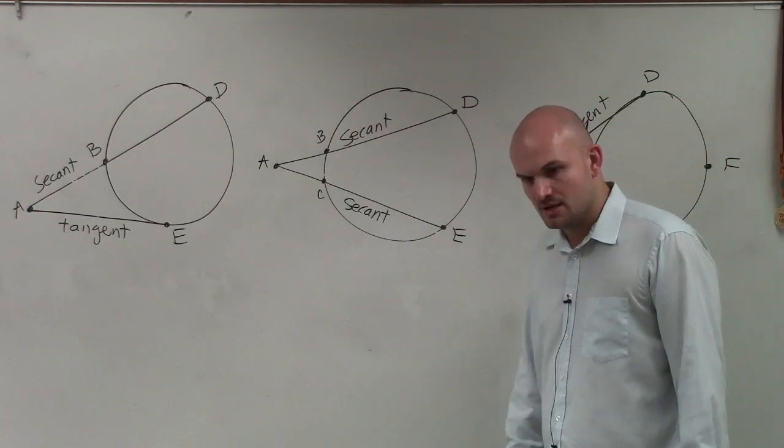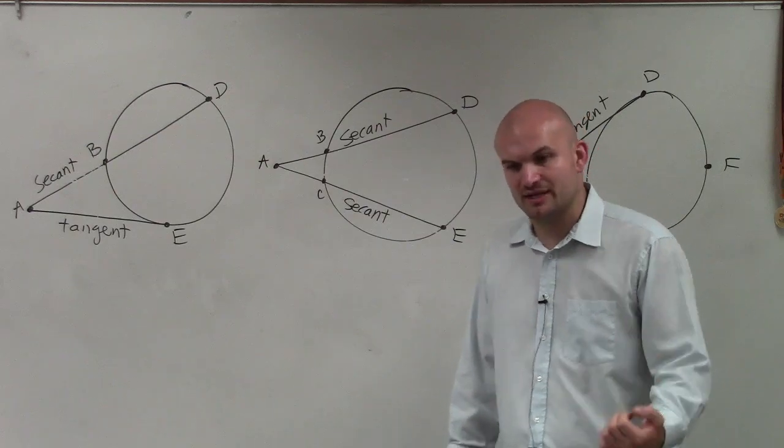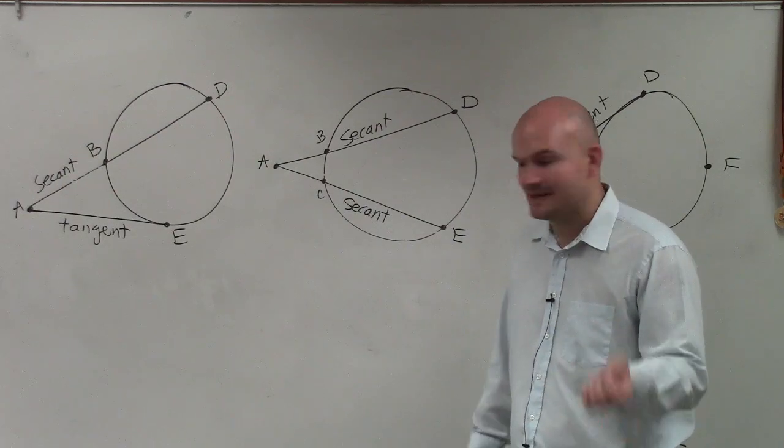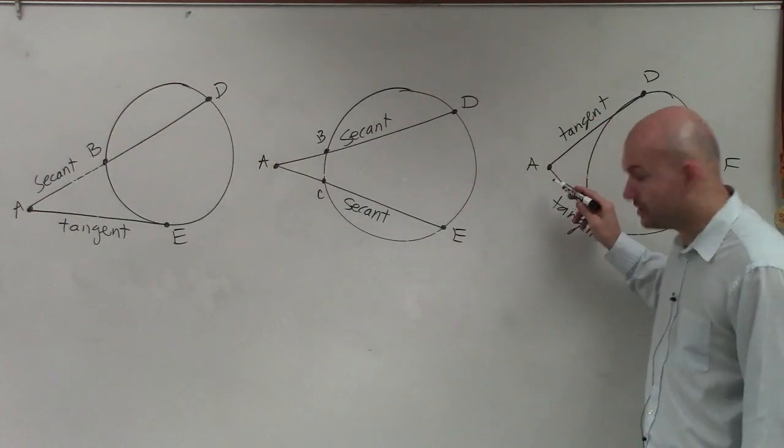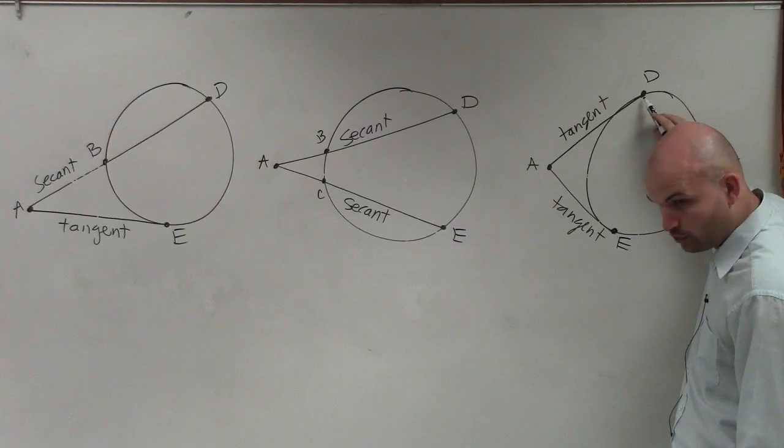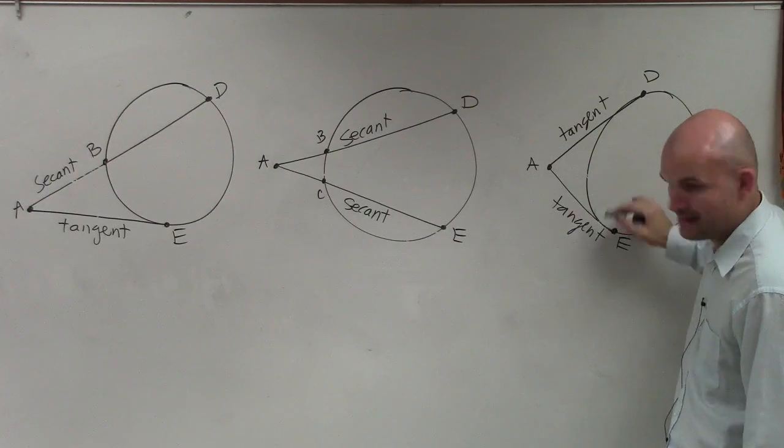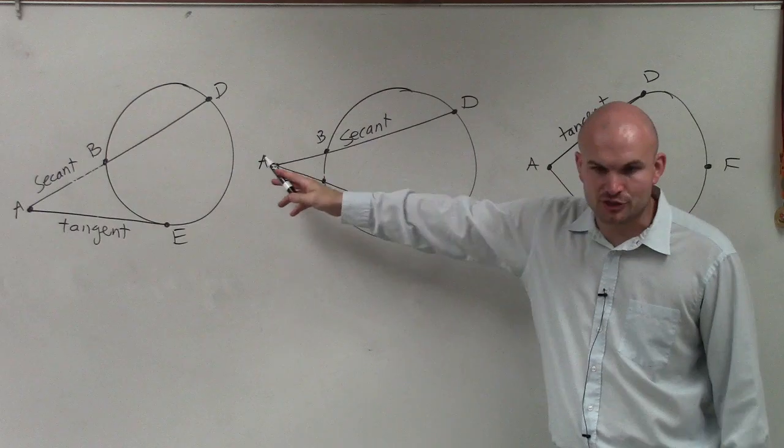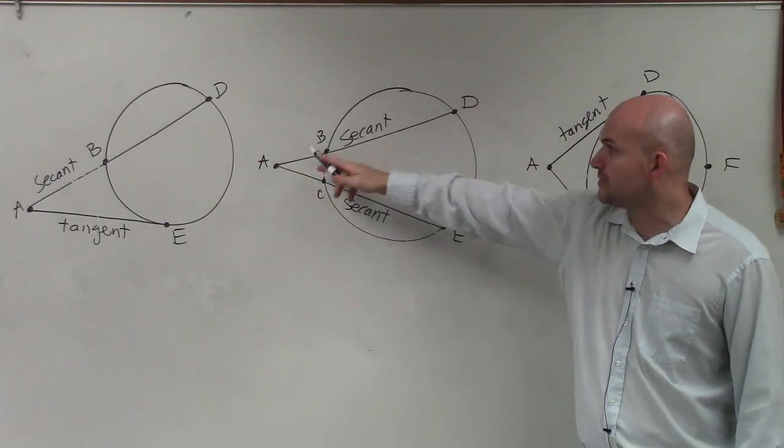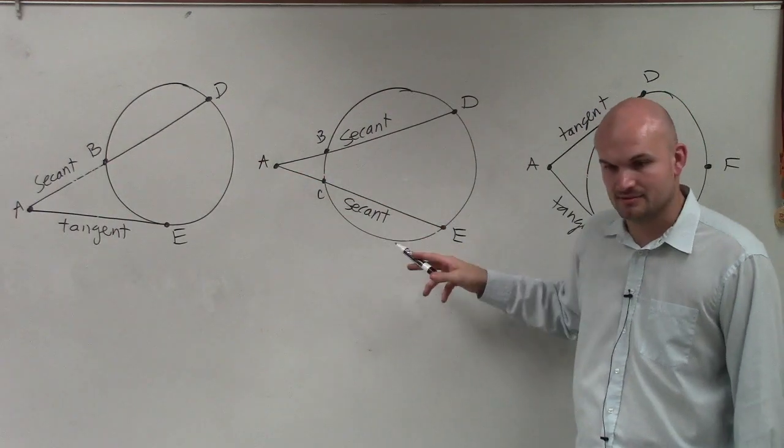No, you don't understand? So remember, the definition from beginning class, a tangent line is a line that goes from a point. It's going to only intersect the circle once. So these two lines are tangent. A secant line is a line that intersects the circle twice. So that's why that's secant, and that's why that's secant. That make sense?